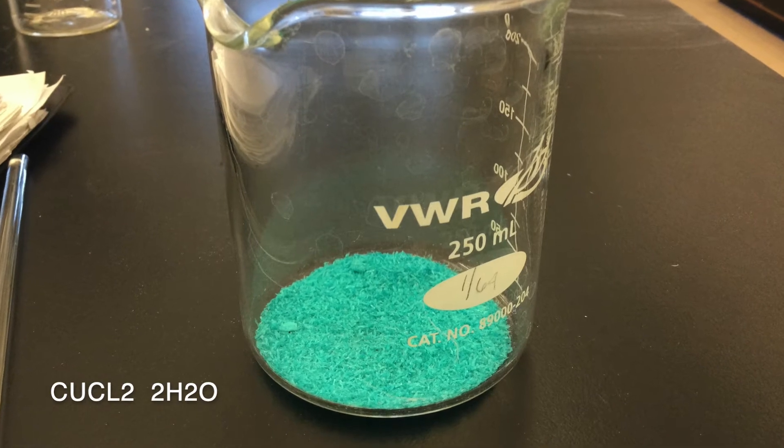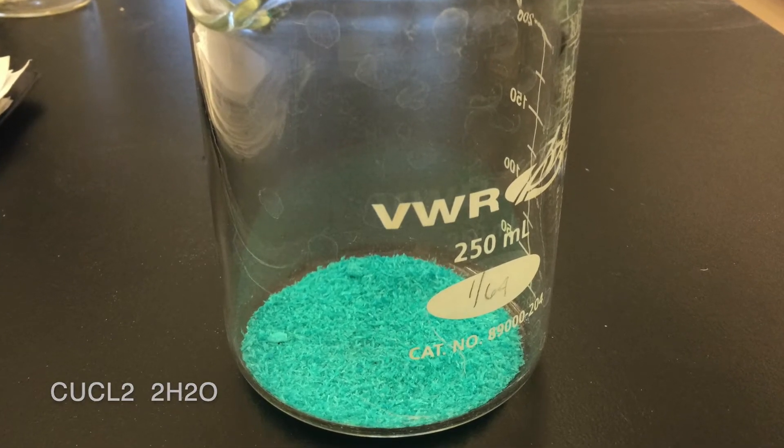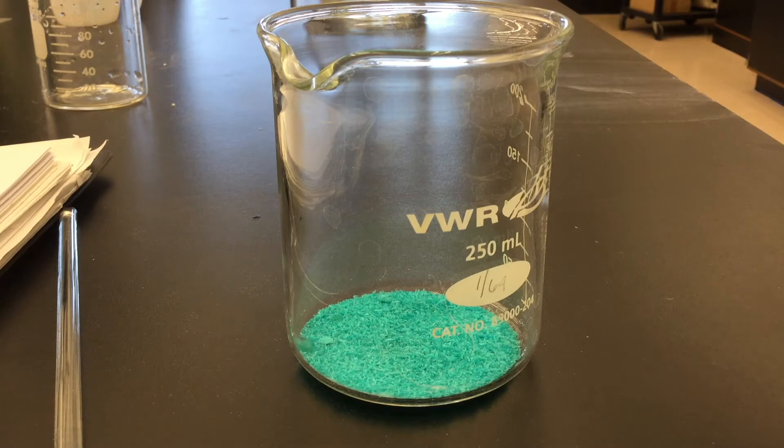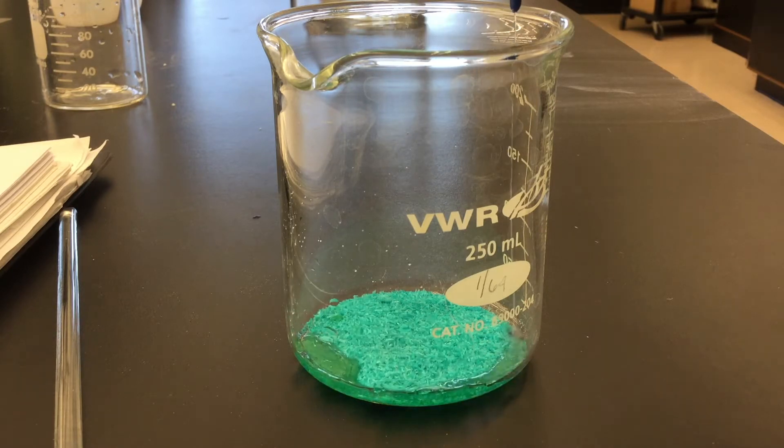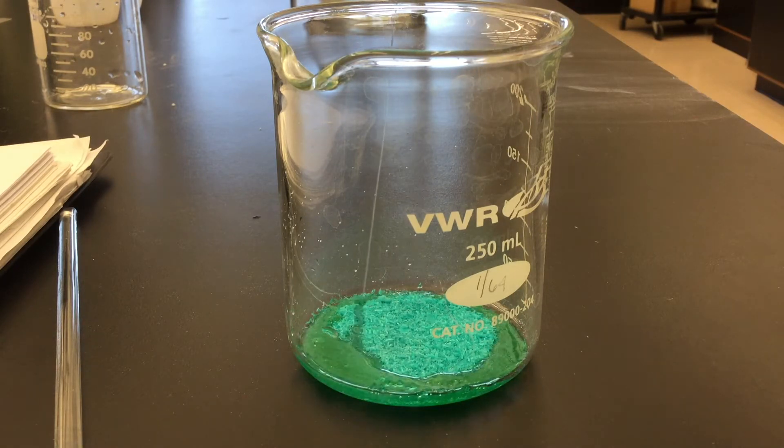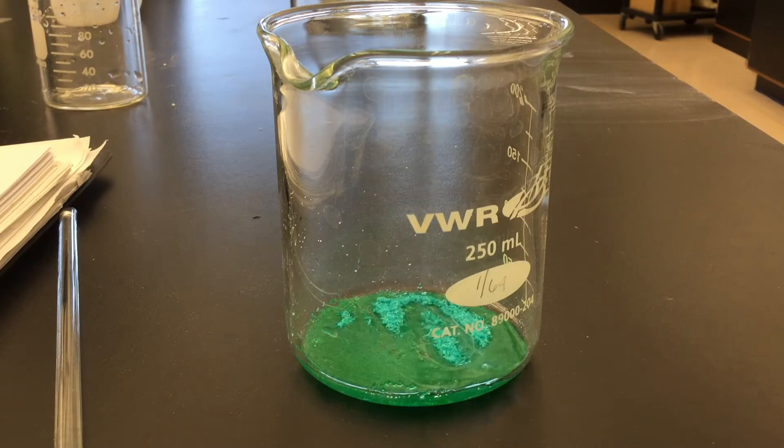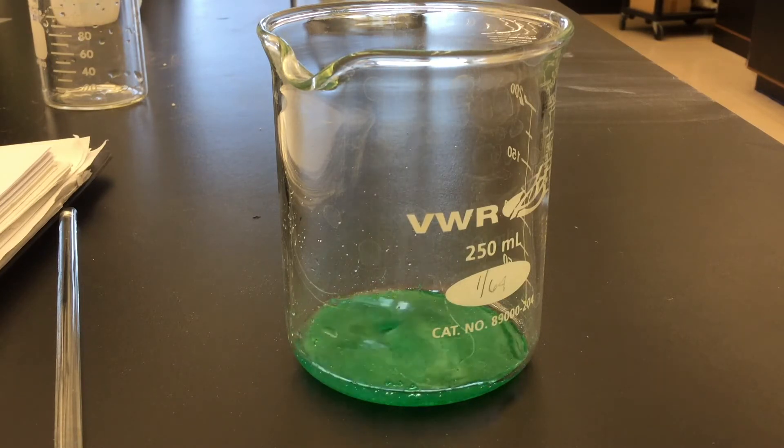Weigh out approximately 5 grams of the copper chloride dihydrate. Put it in a small beaker, wet it with deionized water, just a few milliliters, and then stir the mixture until it completely dissolves.